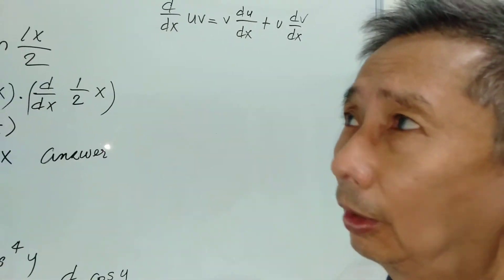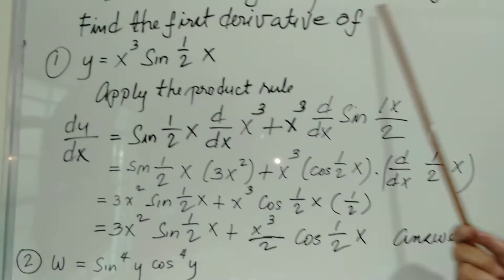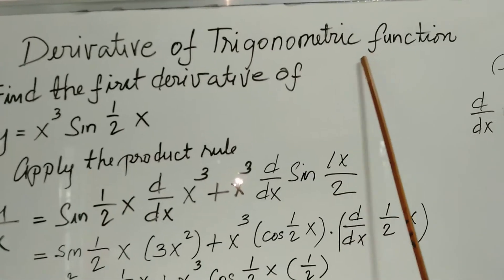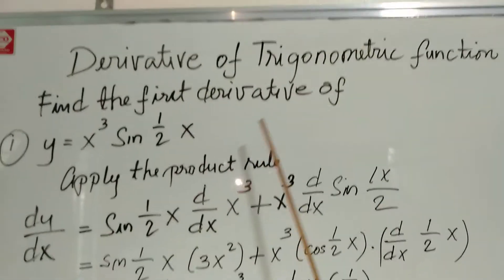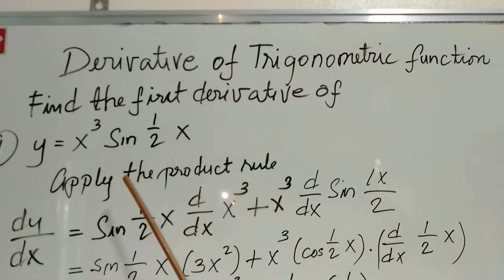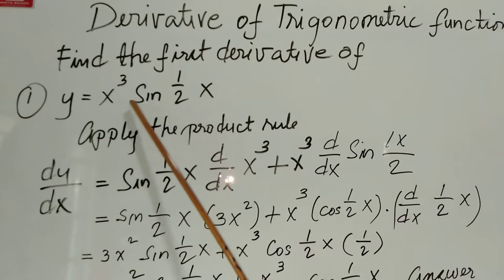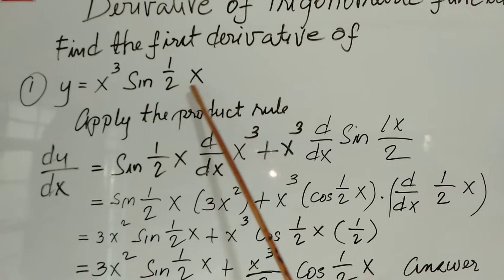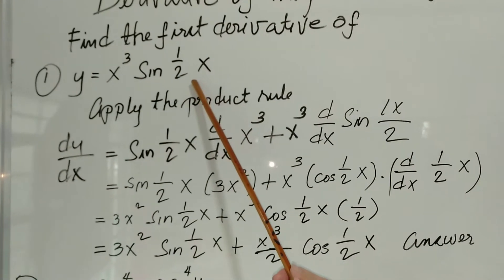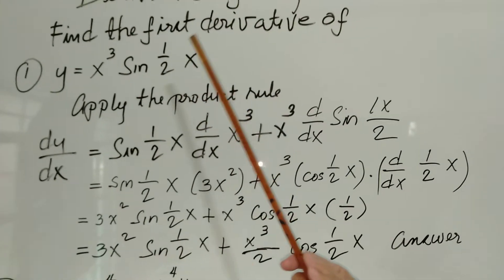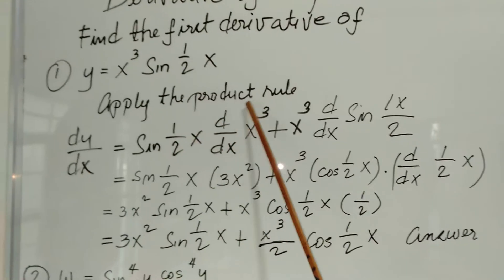Hi, now we'll talk about derivatives of trigonometric functions, and we're going to find the first derivative of each function. The first one is y equal to x cubed sine one-half x. For this one, in finding the derivative, you're going to apply the product rule.